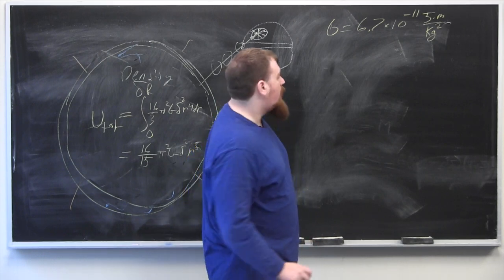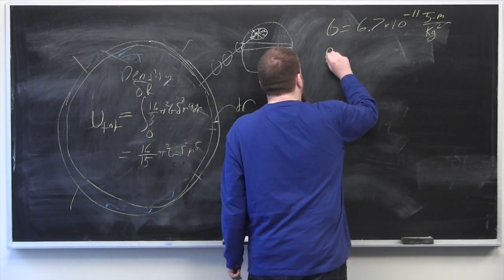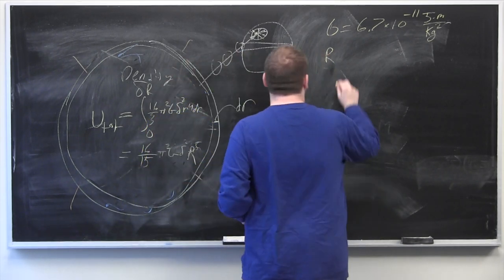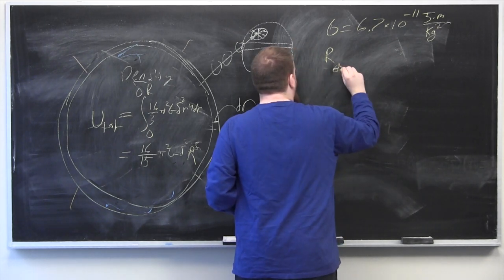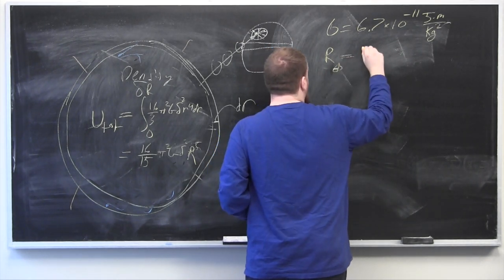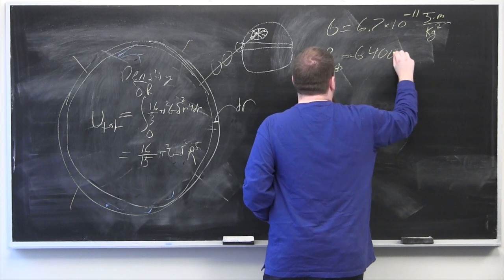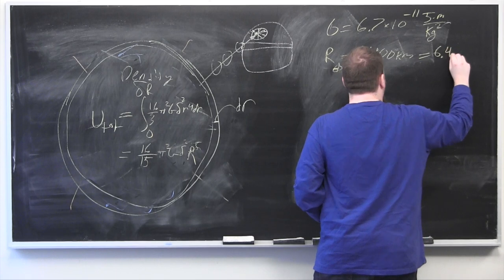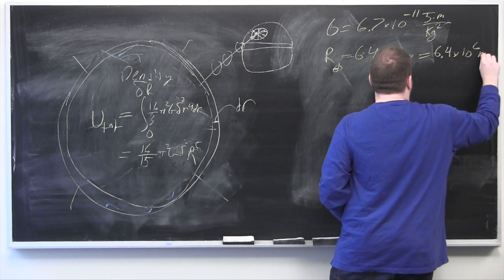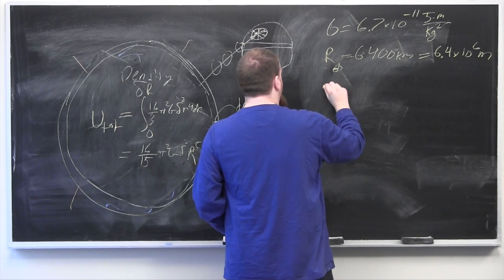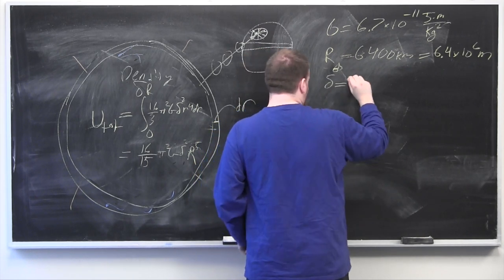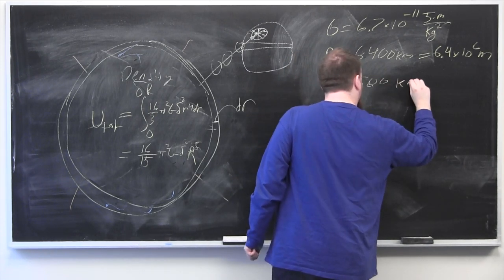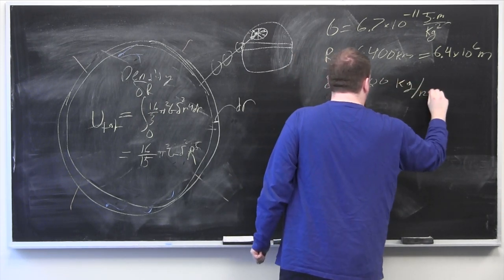And then the radius, this is big R of course since we integrated up to R, the radius of Earth is about 6400 kilometers or 6.4 times 10 to the 6 meters. And then the density of Earth is about 5500 kilograms per meter cubed.